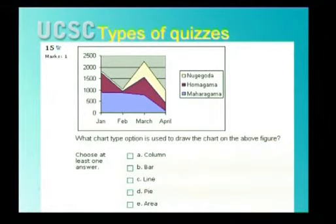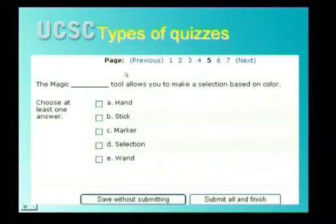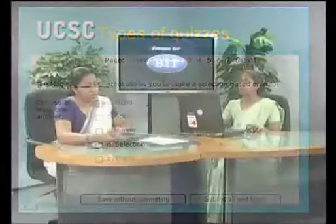Another example has a blank in the stem of the question. By looking at the surrounding words and letters in the stem, students should find the correct answer from the given options.